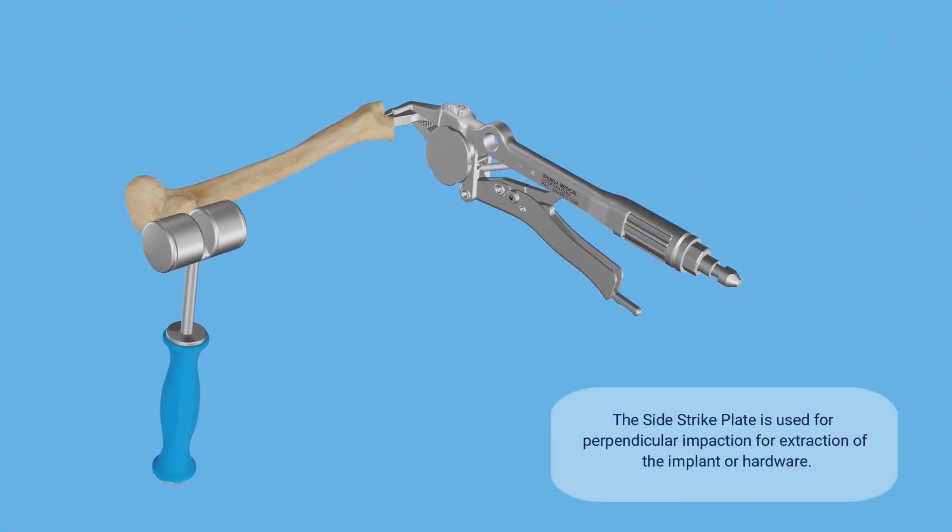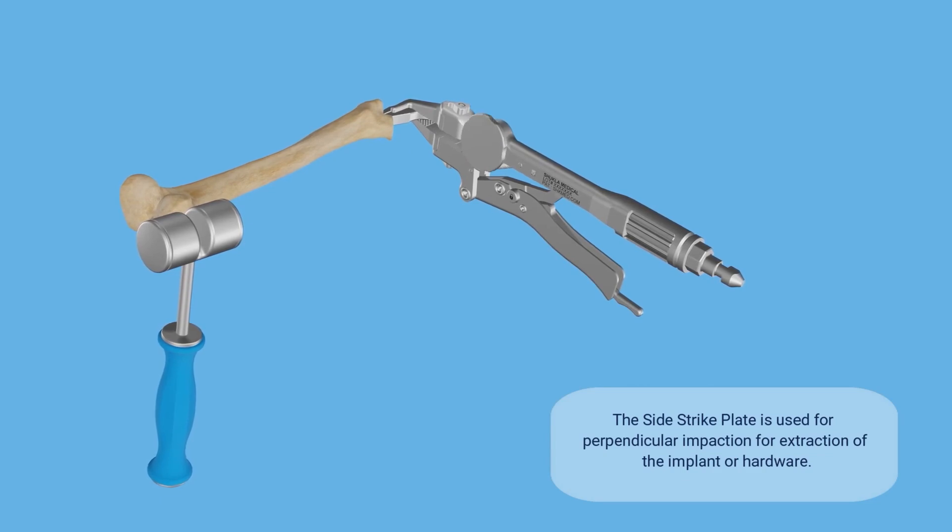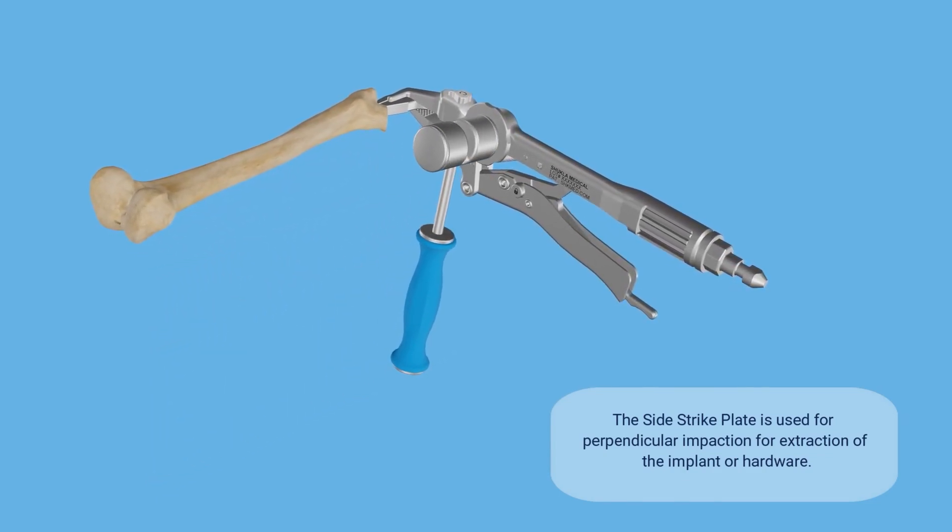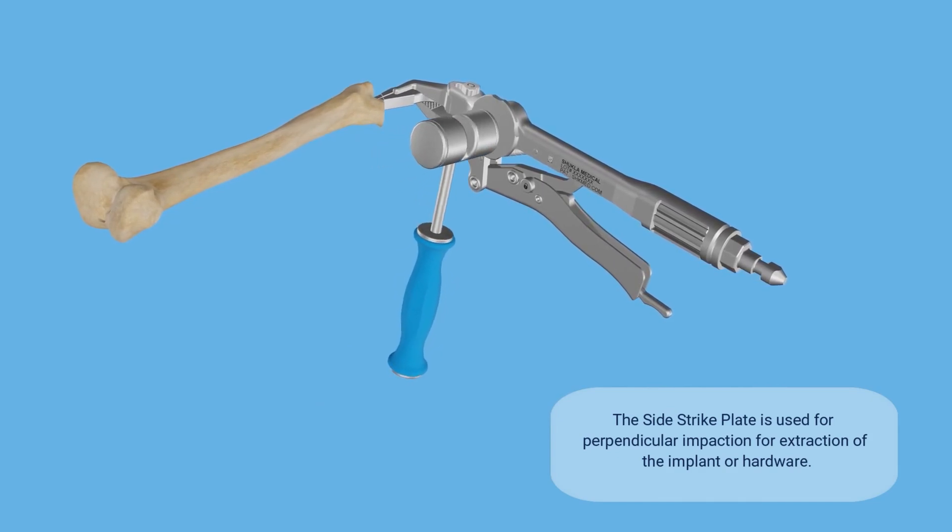The side strike plate is used as an impact surface to extract the implant in the direction perpendicular to the implant or hardware. The mallet is used to impact the plate for implant removal.